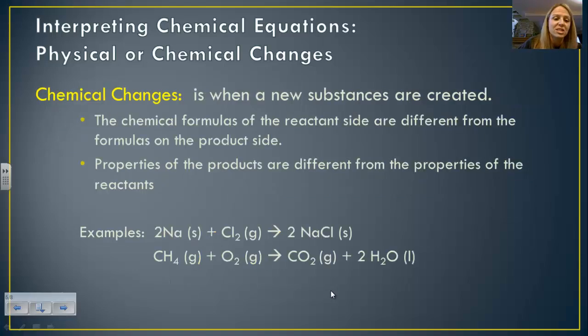Whereas chemical changes is when a new substance is created. So the reactants on the left side of the arrow are going to be completely different than those chemical formulas seen on the right side of your arrow. If you look here, we have solid sodium reacting with chlorine gas to produce sodium chloride solid. So your reactants are different than your products. So a new substance was formed. Also, the properties of your reactants and your products are completely different.